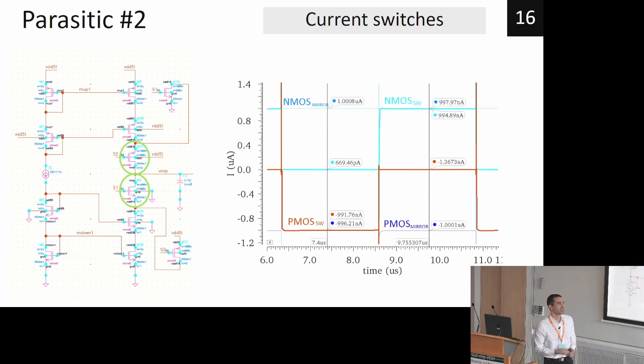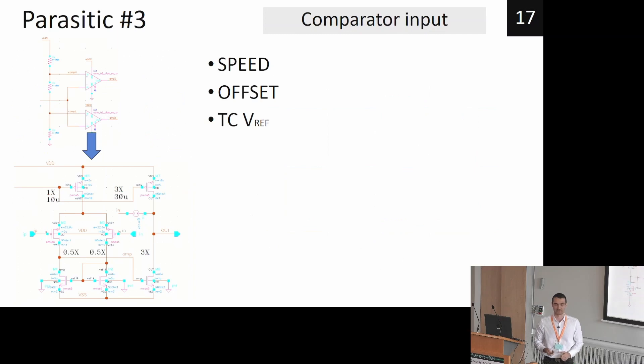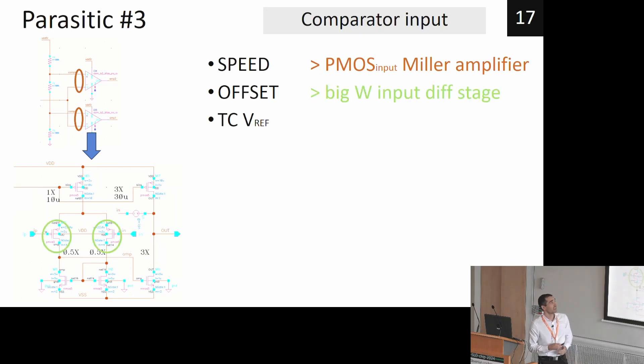The third parasitic comes from the comparator. The comparator was speeded up by using PMOS Miller input amplifier. Then the offset was made as low as possible using big transistors or wide transistors in the input. And the temperature coefficient of reference voltage was limited or lowered by using